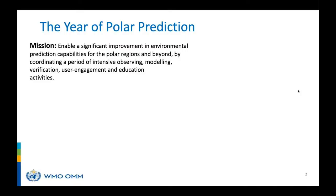The Year of Polar Prediction mission statement is about enabling a significant improvement in environmental prediction capabilities for the polar regions and beyond, by coordinating a period of intensive observation, modeling, verification, user engagement, and education activities. It's about environmental prediction — not just weather, not just the atmosphere. In polar regions, considering the coupled system from the atmosphere, sea ice, ocean, and snow is absolutely critical.